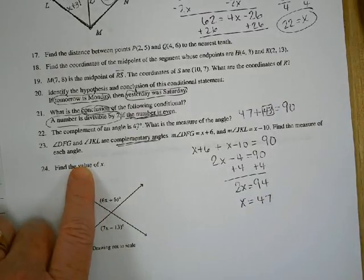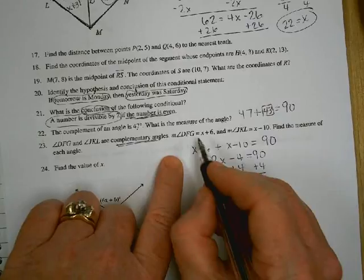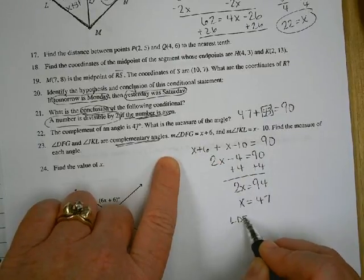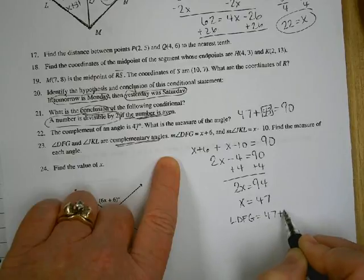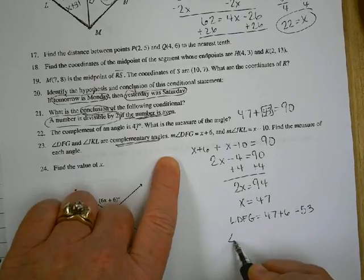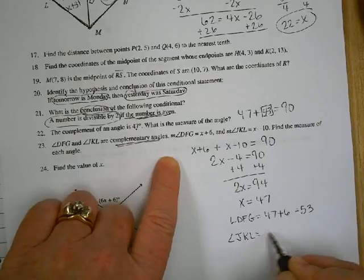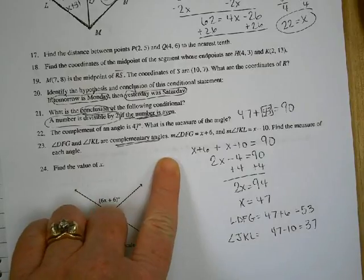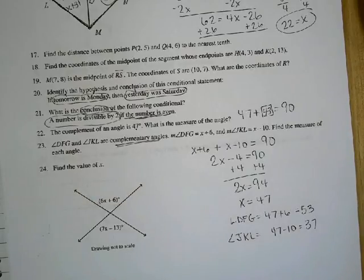If x is 47, then DFG is 47 plus 6, which is 53. And angle JKL is 47 minus 10, which is 37. Did y'all get those?